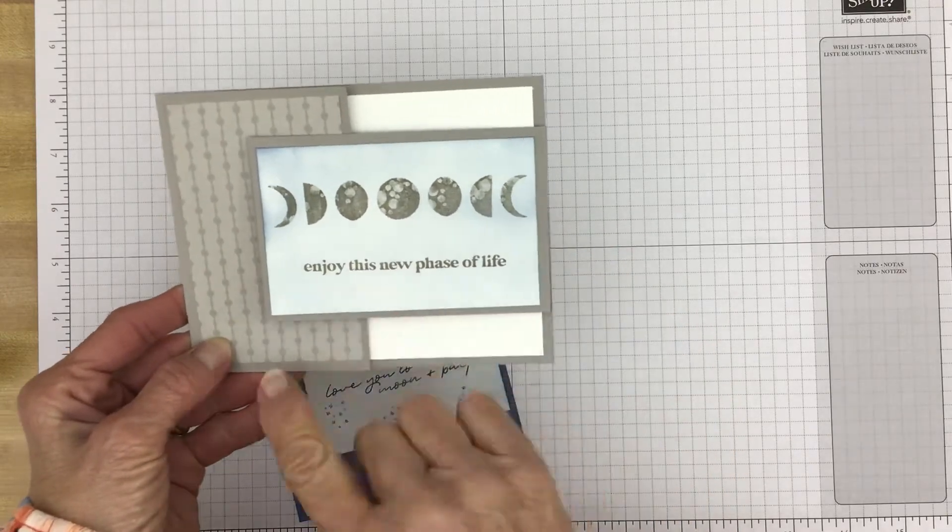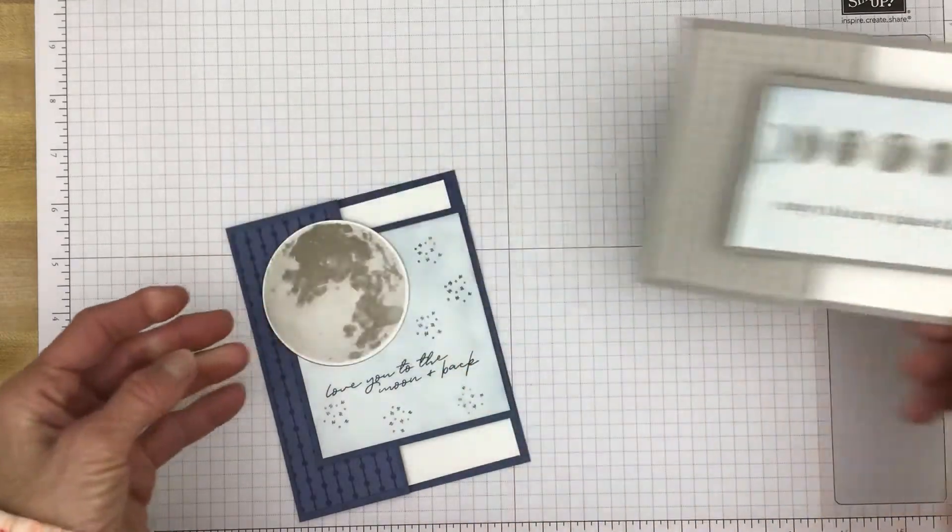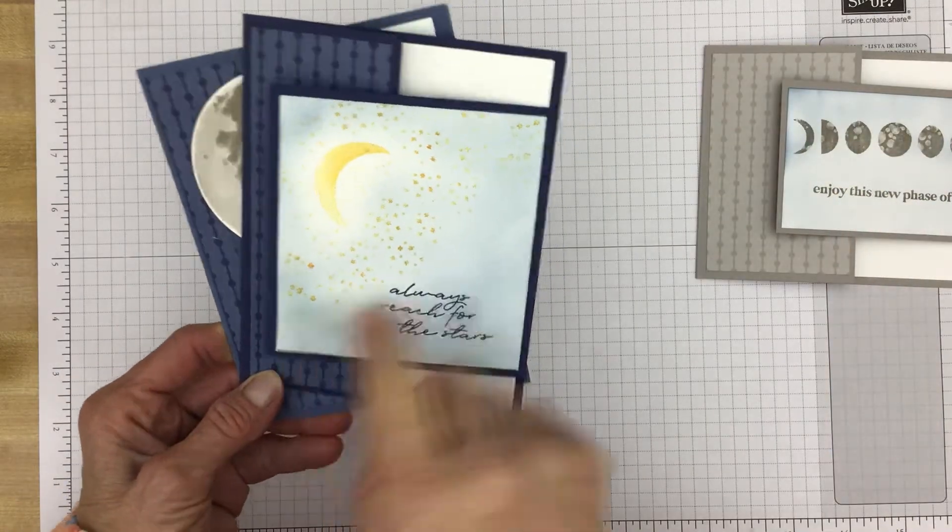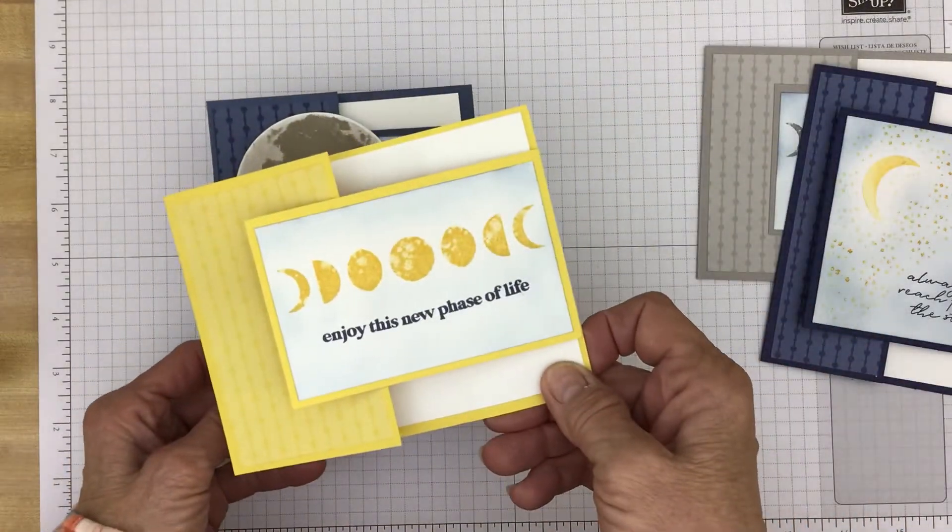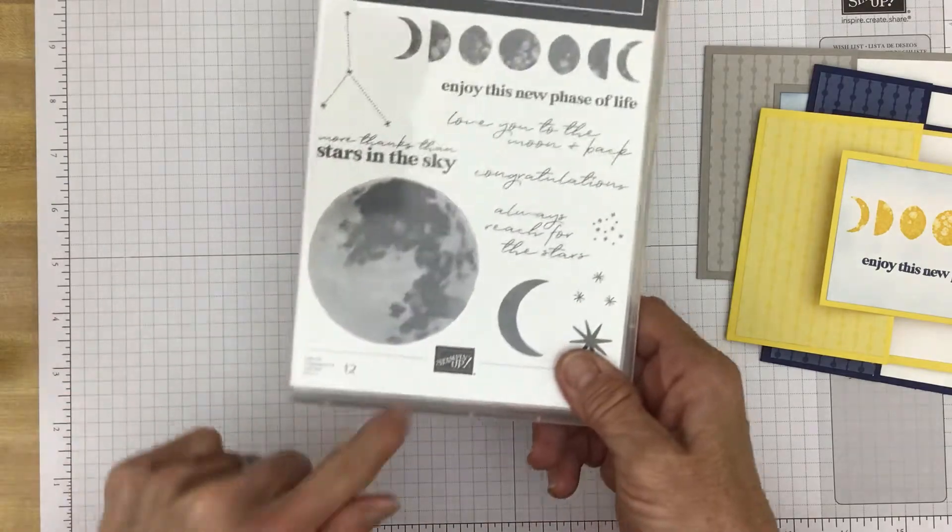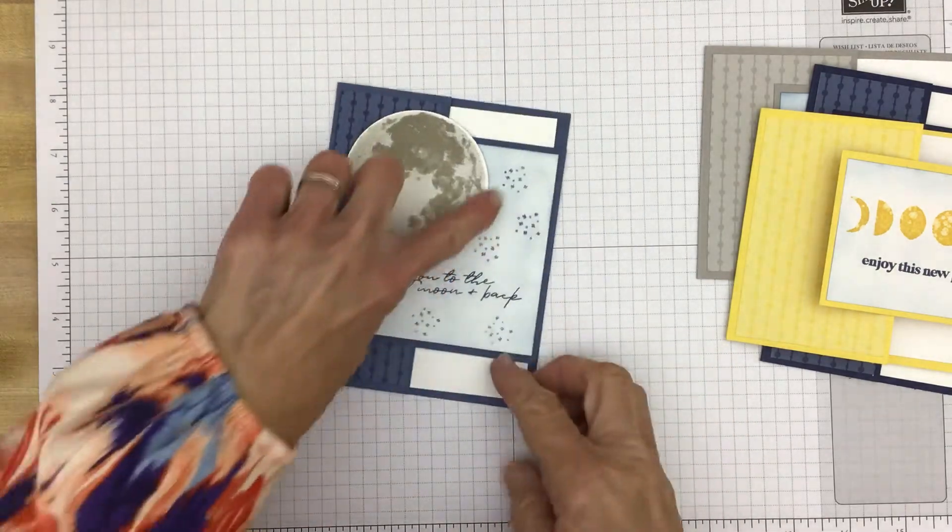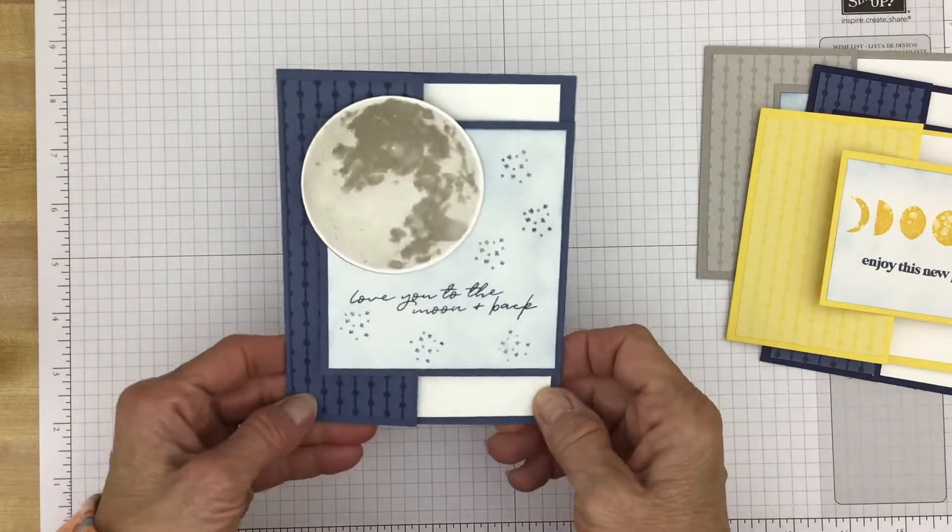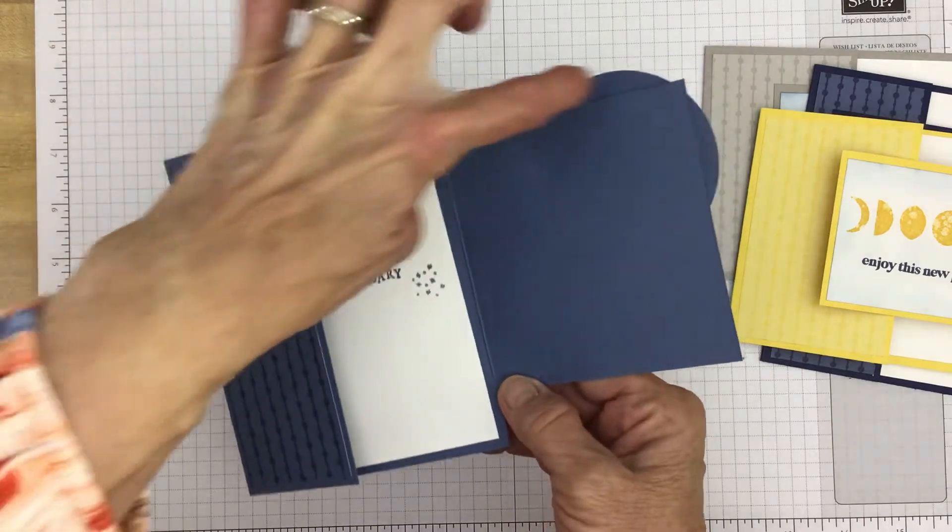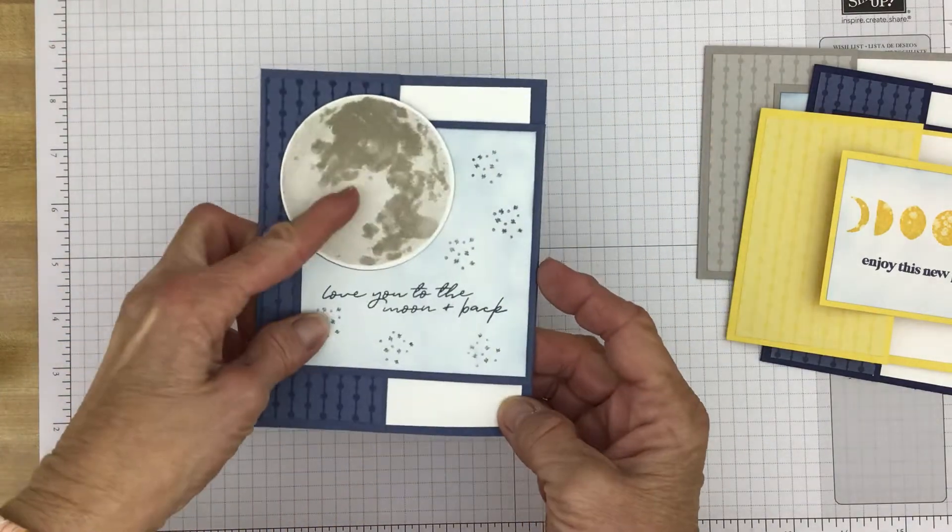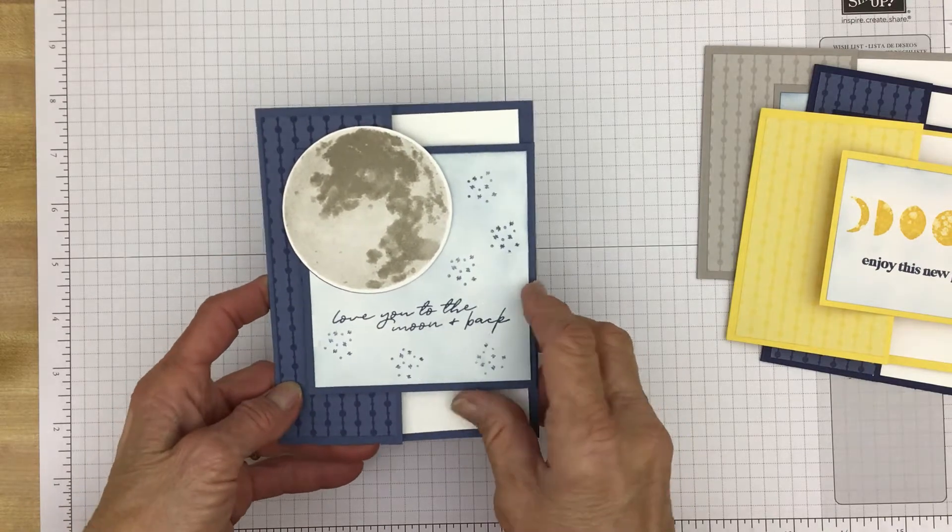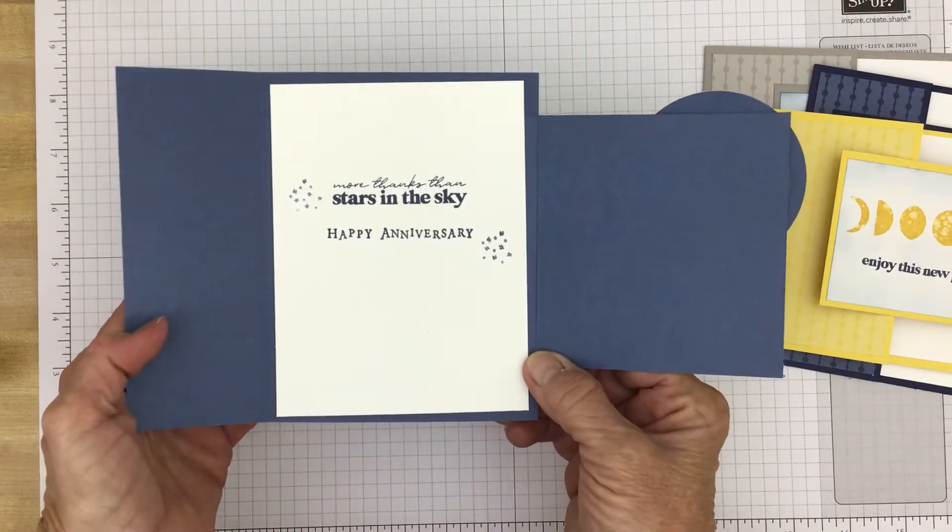So there's that one and this one is in gray granite. And here's one that's in misty moonlight. This one was night of navy. And this one as I said was the daffodil delight. This one is misty moonlight. And it has the great moon image from the stamp set. And it's rather large but you can cut it out with one of the layering circle dies. So I just sort of put it up in the corner but what I did for this was I also cut out a circle to put on the back of the moon so there wouldn't be the basic white sticking out. So this is love you to the moon and back. And then inside I put more than stars in the sky and then happy anniversary.